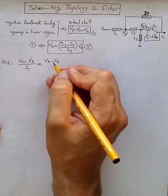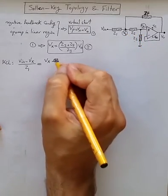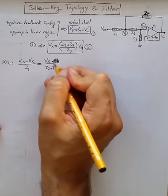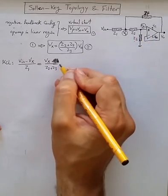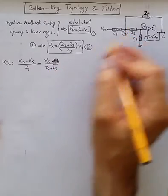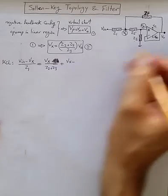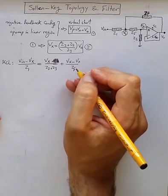Or let's make it even simpler, because it's Vx divided by Z2 plus Z3. Vx divided by Z2 plus Z3, because no current is flowing through positive terminal. So that's the current flowing through Z2, and then plus the current flowing through ZF, which is Vx minus Vout divided by ZF.